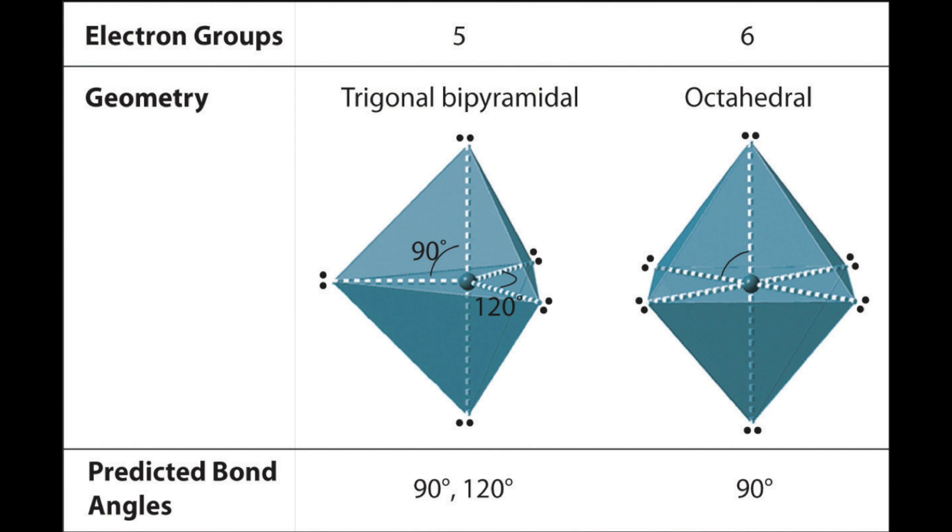Finally, six electron groups gives an octahedral electron geometry with all electron groups being 90 degrees apart.